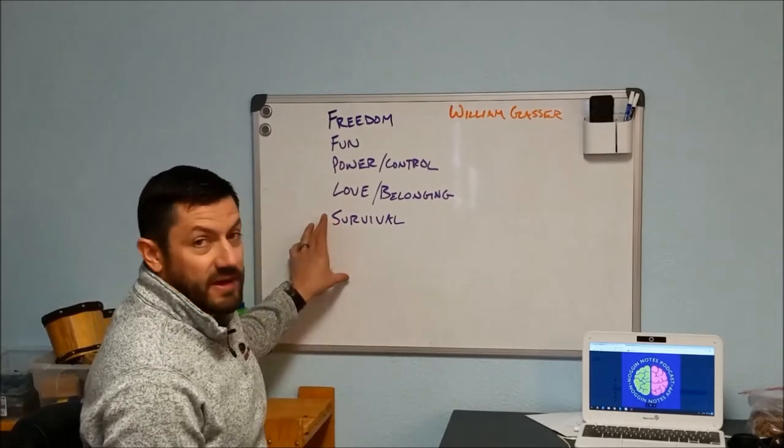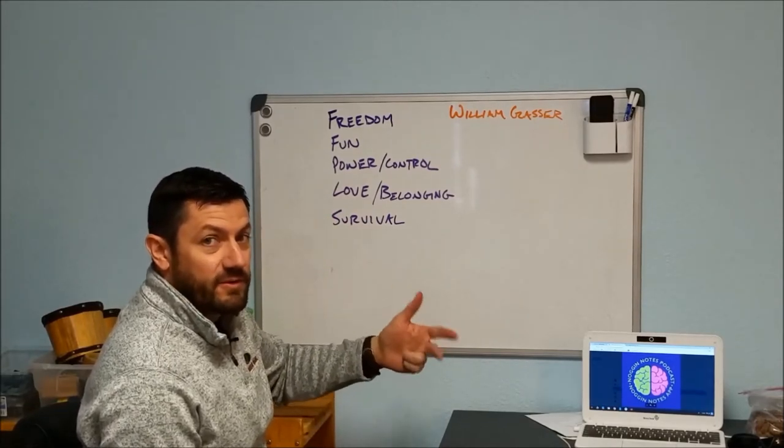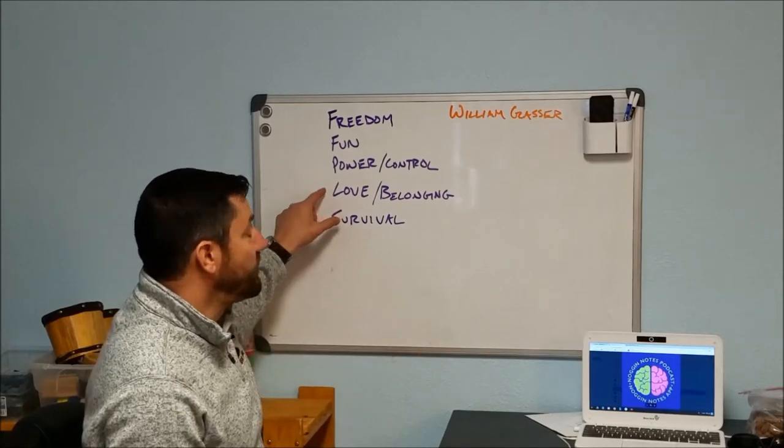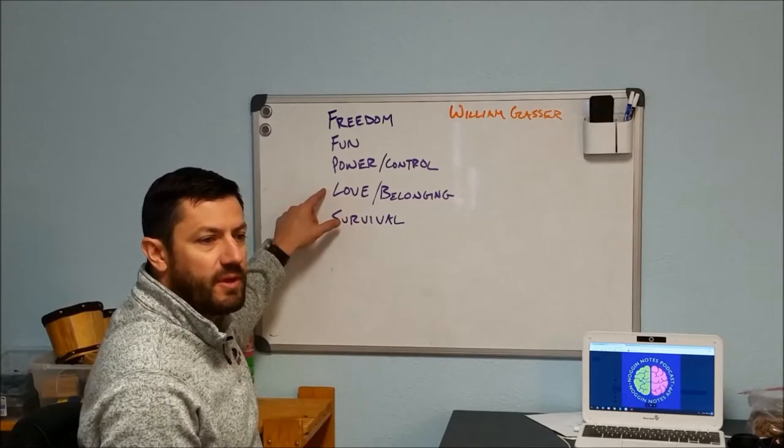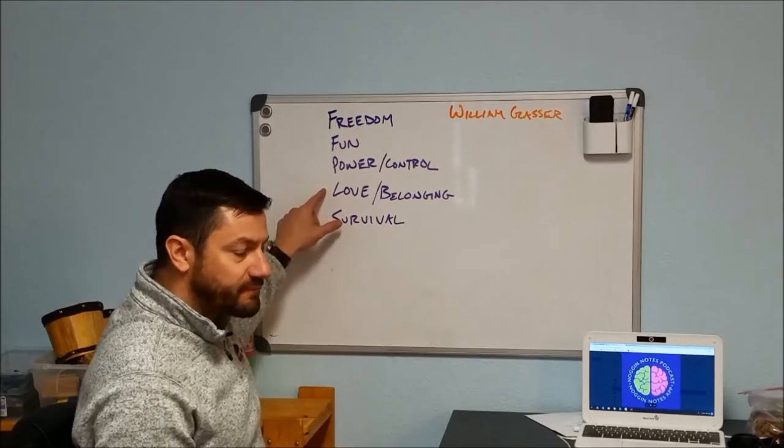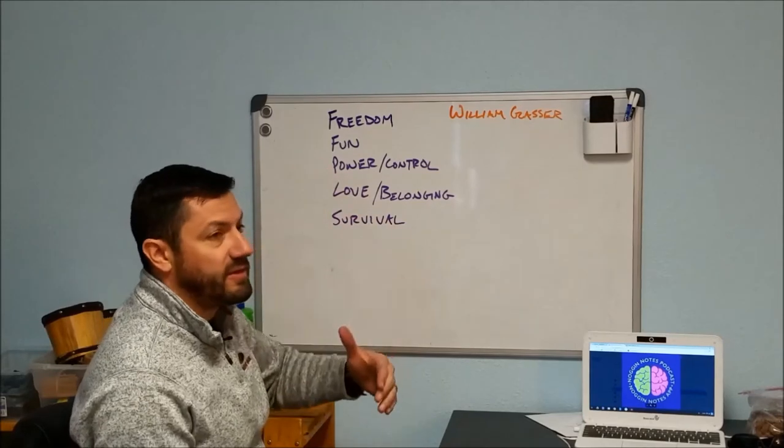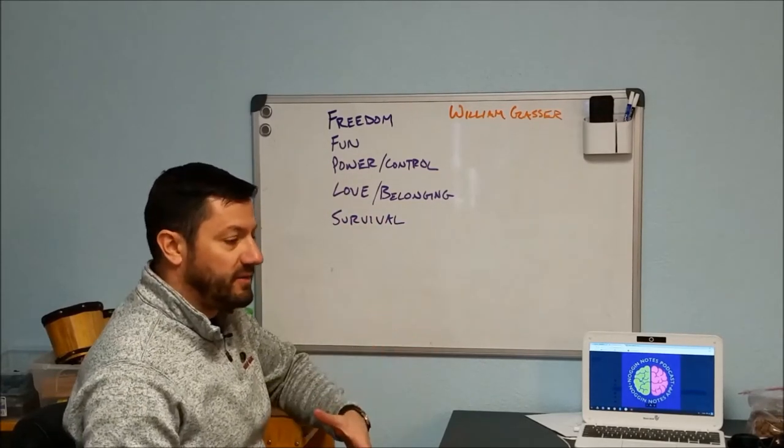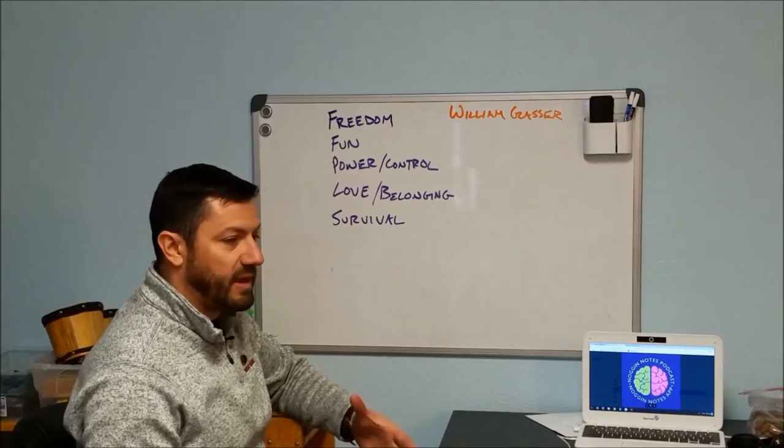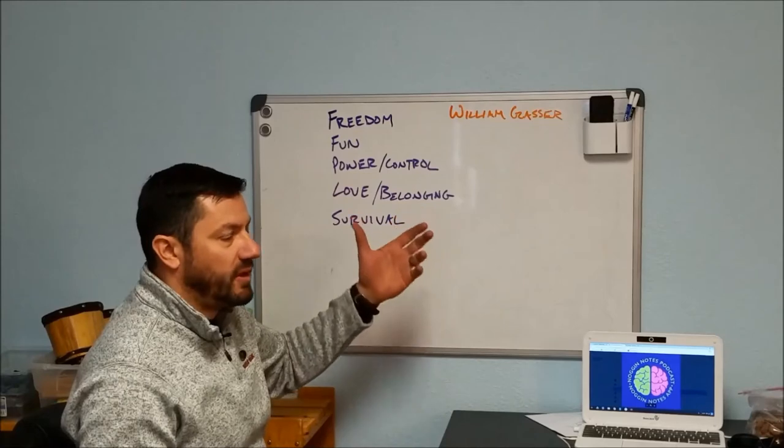Survival is defined as that which we need just to survive, so it's air, food, water. Love and belonging is pretty self-explanatory, that's joining a group, being around people whose company you like, being in relation with one another. Power and control is anything you do to exercise some sort of power or control.